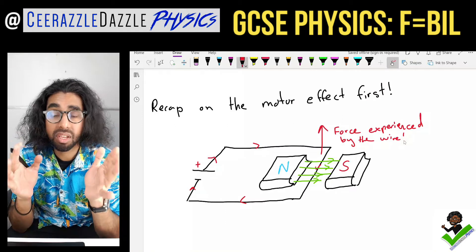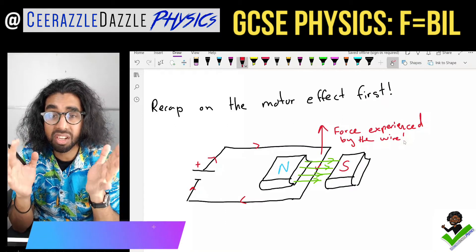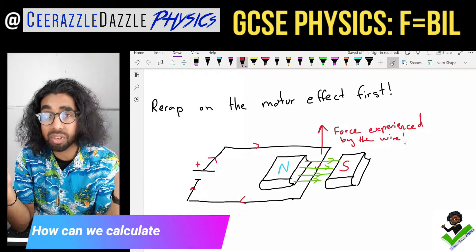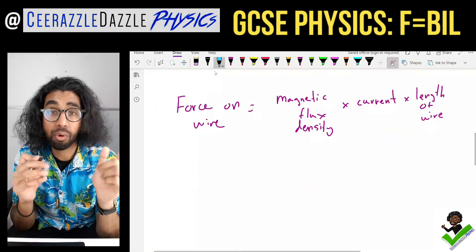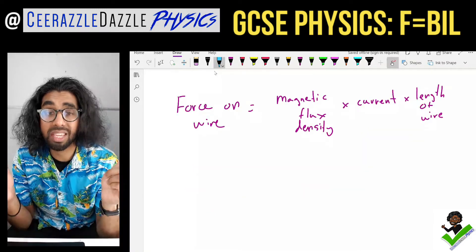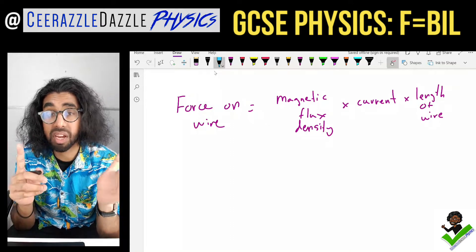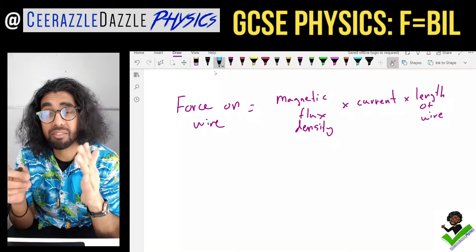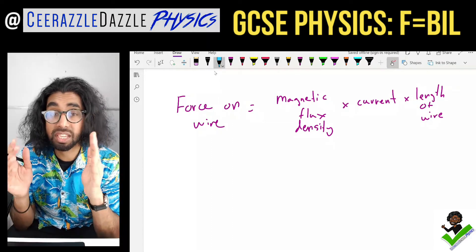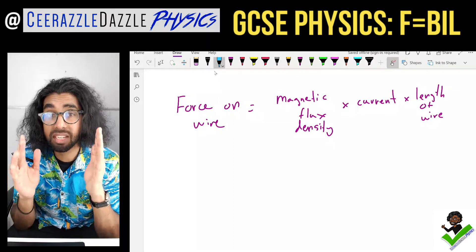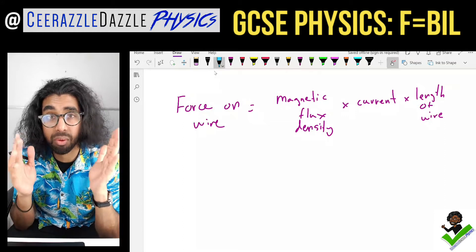Today's question is: what is the magnitude of that force — what is the size of that force, and how could we calculate it? Well, we use the formula: the force on the wire is equal to the magnetic flux density times the current times the length of the wire within the field. So F = B × I × L.